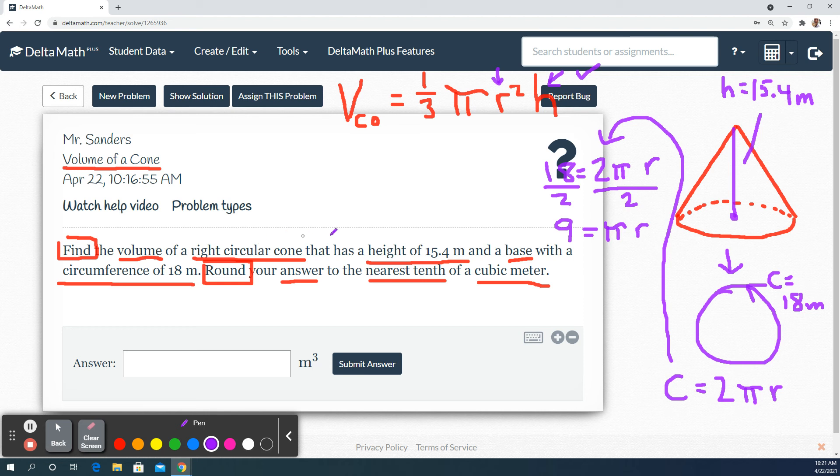That means it's not telling us to approximate pi. That means I have to keep pi floating around in this problem. So I'm going to divide by pi, divide by pi, and I'm going to get nine over pi equals our r.